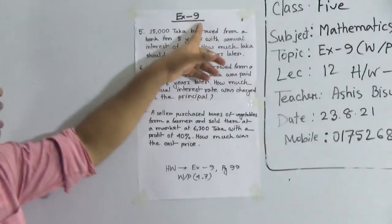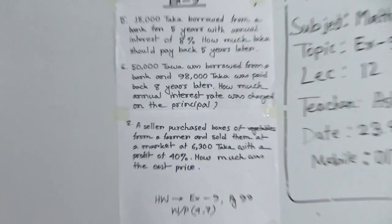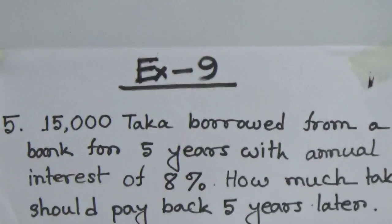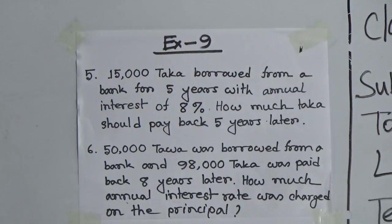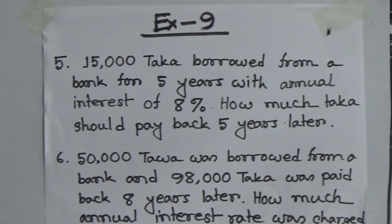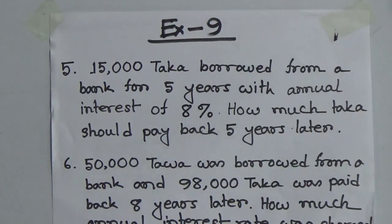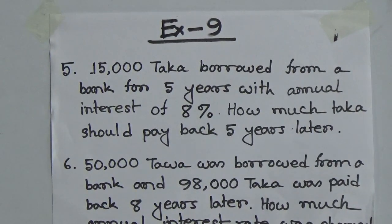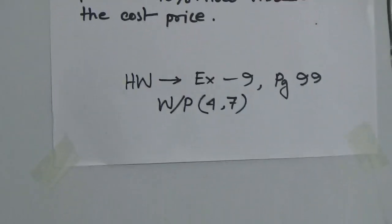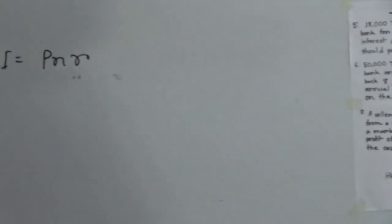Here you notice exercise 9 — the name of the chapter is simple interest. In order to solve these math problems, at first we need to know the formula of principal, the formula of rate of interest, the formula of time, and the formula of simple interest. Please notice: I equal to PNR. This is the formula of simple interest.